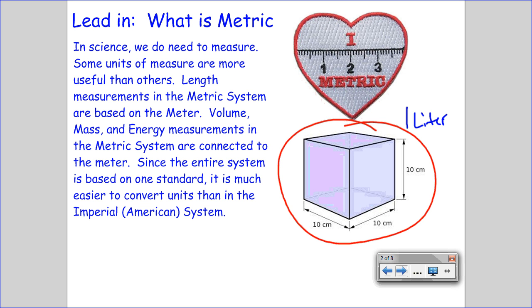They took the length measurement of the meter, chopped it into a hundred to make the centimeter, and then made the liter out of that. A cube that is ten centimeters on a side has a volume of one liter.